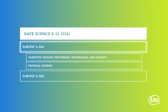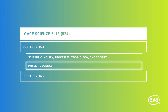Let's start with subtest 1, which is split into two sub-areas. The first one is a doozy: scientific inquiry, processes, technology, and society — yes, that is all one sub-area. And the second one, a little bit easier, is physical science. You're going to see about 24 questions from sub-area 1 and 56 from sub-area 2.